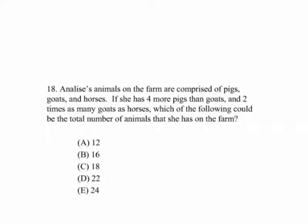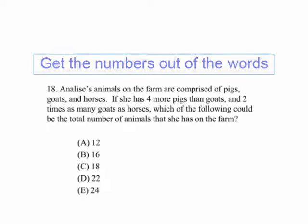In this case, we've got animals on the farm comprised of pigs, goats, and horses. She has four more pigs than goats and two times as many goats as horses. Which of the following could be the total number of animals she has on the farm? You look at it and go, what do I do with this? The first thing you do is get the numbers out of the words.